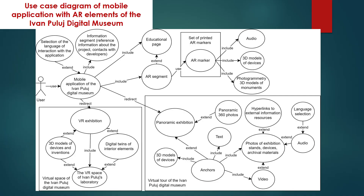The slide shows the use case diagram of the developed application. User interaction starts from the main menu where they can choose the interface language, written information about the project, developers and view a tutorial on how to use the AR segment of the application. This segment contains digital models of inventions, models created with photogrammetry process and audio accompaniment. All multimedia elements are displayed after the camera reads the corresponding target card. Also from the main menu the user can choose to view the virtual space of the laboratory or to take a look at the panoramic exposition of the Ivan Poulou digital museum.